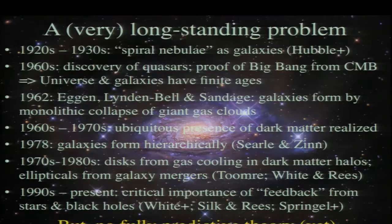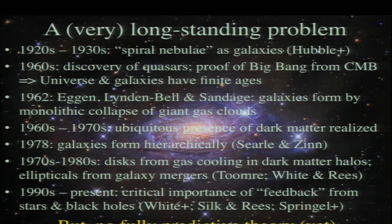This has been a very long-standing problem. It's hard to trace exactly when people first started to think about galaxy formation, but probably shortly after it was realized that the universe is expanding and individual galaxies are moving apart. One of the most important theoretical foundations was proposed in 1962 by Eggen, Lynden-Bell, and Sandage—a simplified theory for how galaxies form by the monolithic collapse of giant gas clouds. It turns out this theory is too simplified to describe what really happens, and after more than 50 years we understand that the problem is greatly complicated by processes I'll talk about shortly.